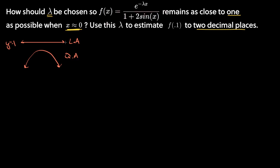So let's make a linear approximation of this function for x values near zero and design it so it equals the line y = 1. Our linear approximation formula for x near zero is: f(x) ≈ f(0) + f′(0)·x.